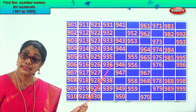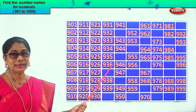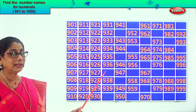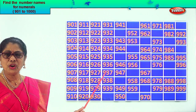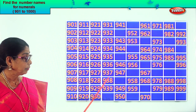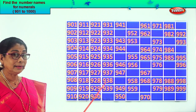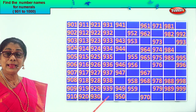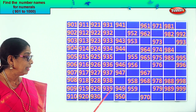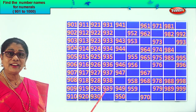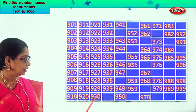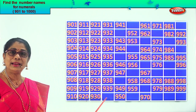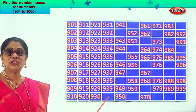After 36 comes 37, so we get the next missing number: 937. 938, 939. After 39, 40. So we get 940.